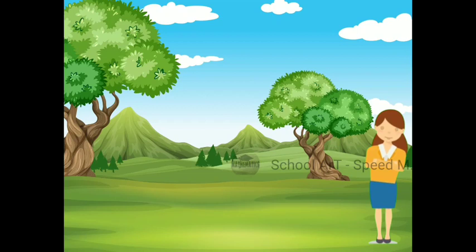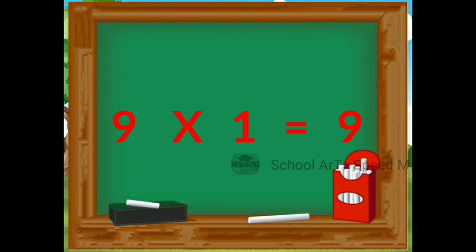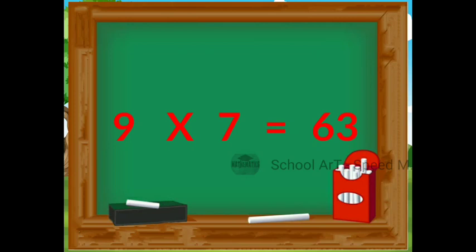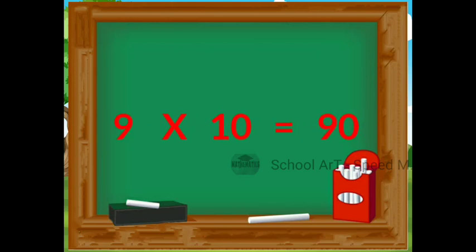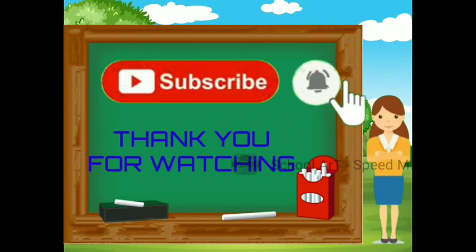Hello friends. Today we will learn the table of 9. 9 ones are 9, 9 twos are 18, 9 threes are 27, 9 fours are 36, 9 fives are 45, 9 sixes are 54, 9 sevens are 63, 9 eights are 72, 9 nines are 81, 9 tens are 90. Children, for more interesting videos, please do subscribe and don't forget to hit the bell icon.